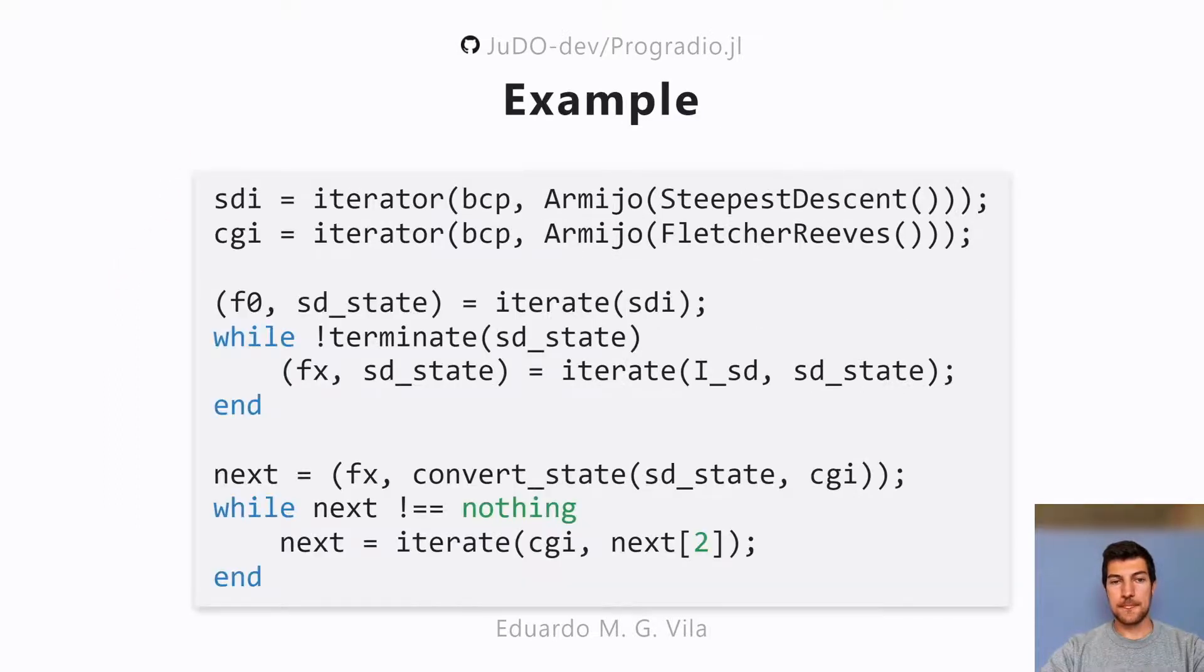Here's a quick example where let's say you want to solve a problem first using a steepest descent method and then at some point you wish to switch to a conjugate gradient method. You can just simply create these iterators and you start iterating on the steepest descent until a terminate function that you've defined is met. At that point you can just switch to the conjugate gradient iterator and keep iterating until the default convergence is met.